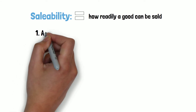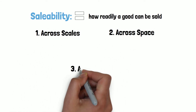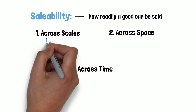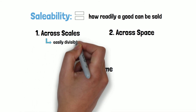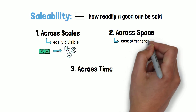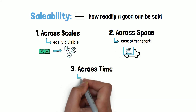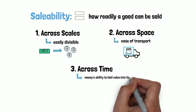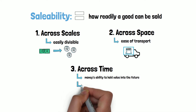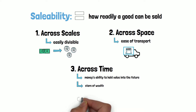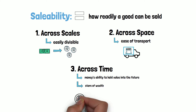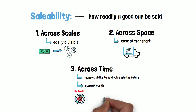Saleability of goods depends on three things: saleability across scales, across space, and across time. A good that is saleable across scales can be easily divisible. Saleability across space indicates ease of transport as people need to travel. Saleability across time is the most important — it refers to money's ability to hold value into the future, which allows you to store wealth. To be saleable across time, a good has to maintain value. It must be durable. Apples rot; they're not saleable across time because their value does not last.